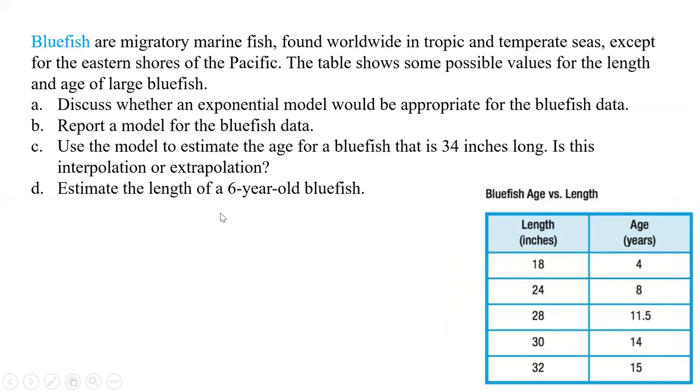All right. So now we have bluefish, migratory marine fish found worldwide in tropic and temperate seas, except for the eastern shores of the Pacific. The table shows some possible values for the length and age of large bluefish. We need to discuss whether an exponential model would be appropriate for the bluefish data. We need to report a model for the bluefish data. Use the model to estimate the age for bluefish that's 34 inches long. Now is that interpolation or extrapolation? Well, before we even do that one, we can look at our table here and we can see 34 inches. That's beyond this table. And so we can say that's extrapolation.